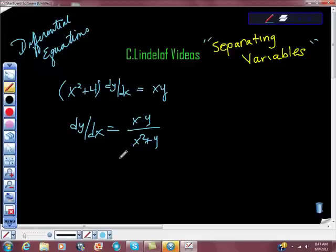I'm going to multiply both sides by dx, and divide by y at the same time, and I get dy over y is equal to x over x squared plus 4 dx.